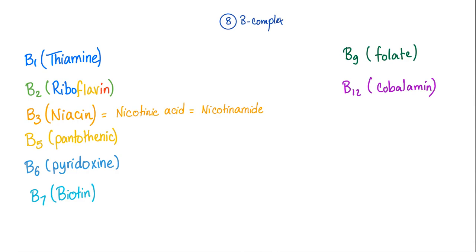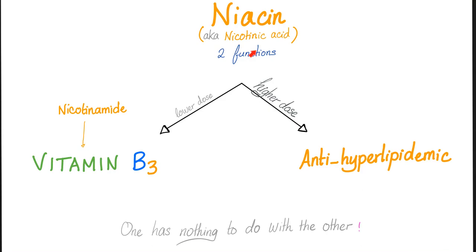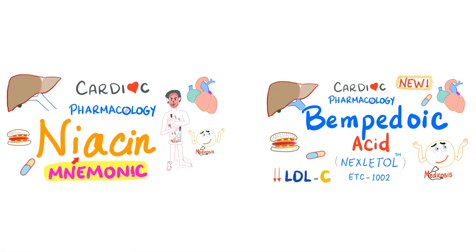Niacin is a water-soluble vitamin. The following are synonyms: B3, niacin, nicotinic acid, and nicotinamide. Niacin has two different functions. It's a vitamin and also a lipid-lowering drug. One function has nothing to do with the other because the dose is different. It's like aspirin - low-dose aspirin is anti-platelet, high-dose aspirin is anti-inflammatory. Nicotinamide is only a vitamin, not an anti-hyperlipidemic drug. Therefore, nicotinamide cannot cause flushing.